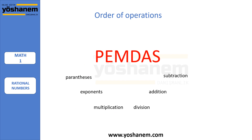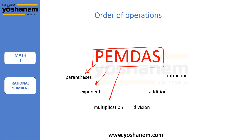Now let's look at order of operations in rational numbers. This order is important because if you don't follow the correct order you end up with a wrong answer, so please keep that in mind. I'm sure you've heard of PEMDAS. P is for parenthesis, E is for exponents, M is for multiplication, D is for division, A is for addition, and S is for subtraction. It's easy to keep PEMDAS in mind, so please be careful with that.